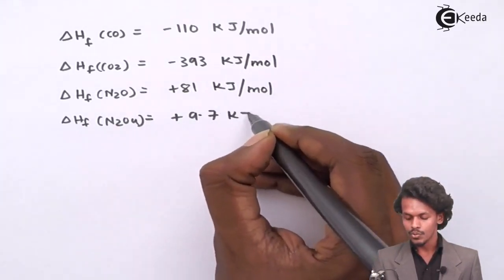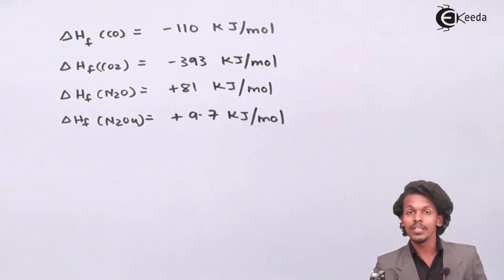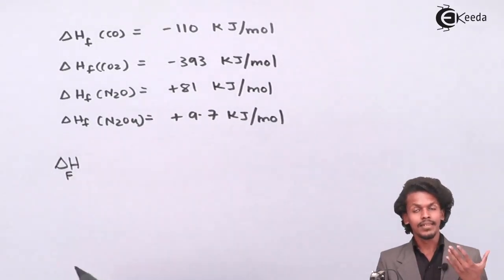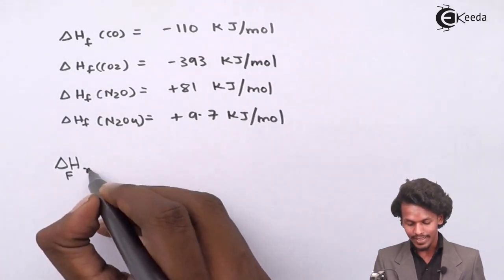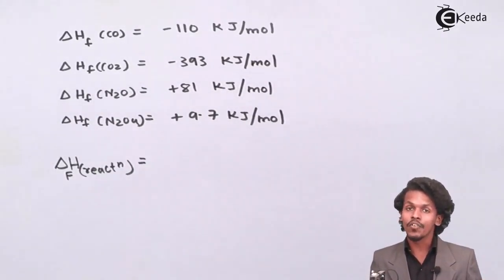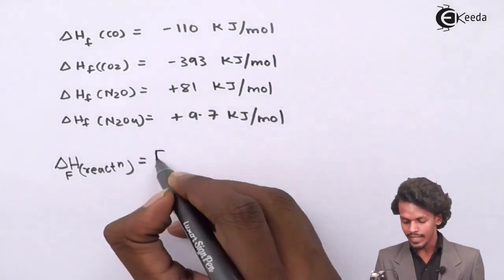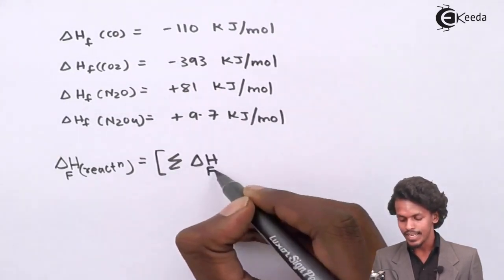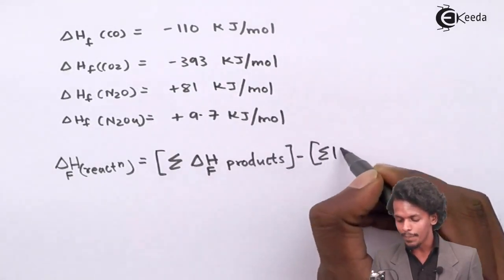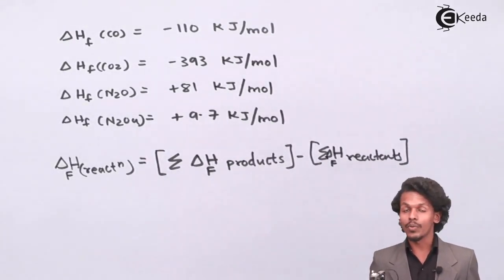On that basis we have to calculate the enthalpy of the overall reaction. The formula is: delta H of reaction equals the sum of the enthalpy of formation of the products minus the sum of the enthalpy of formation of the reactants.